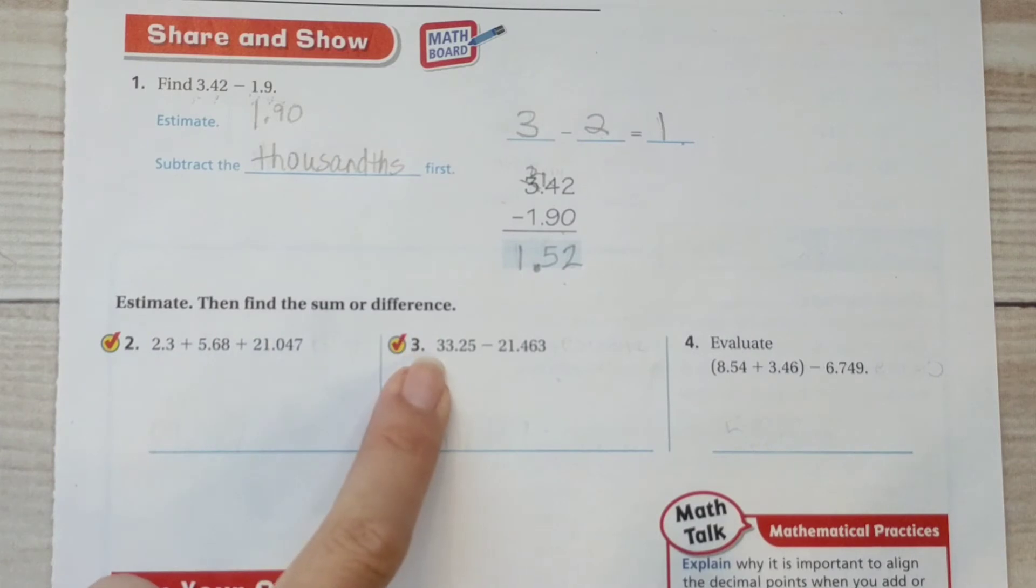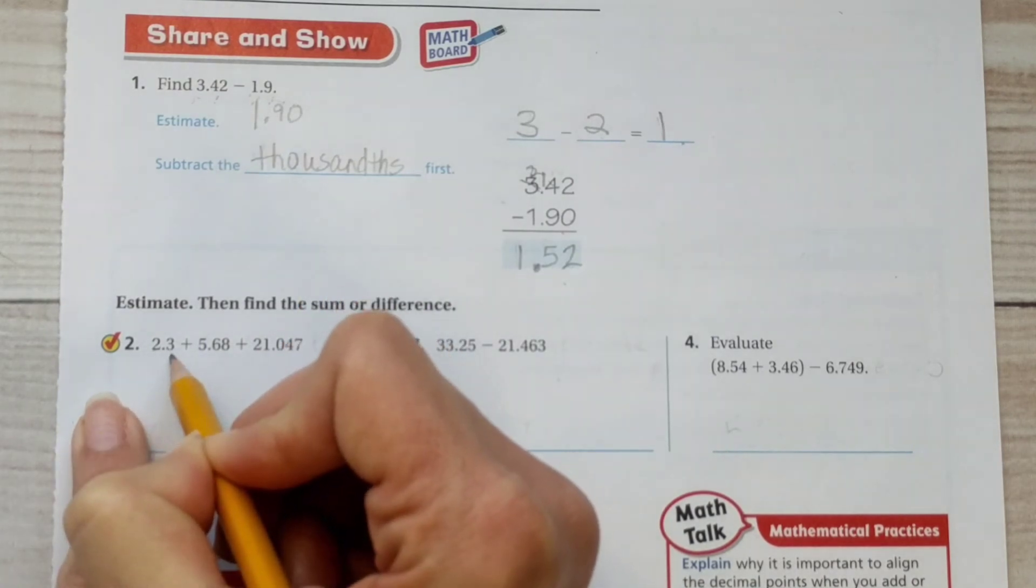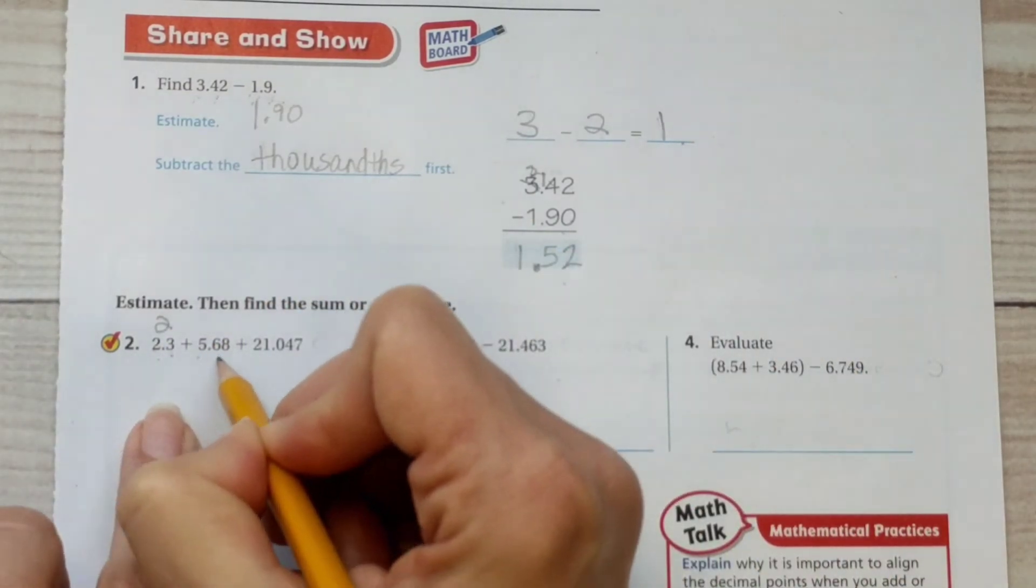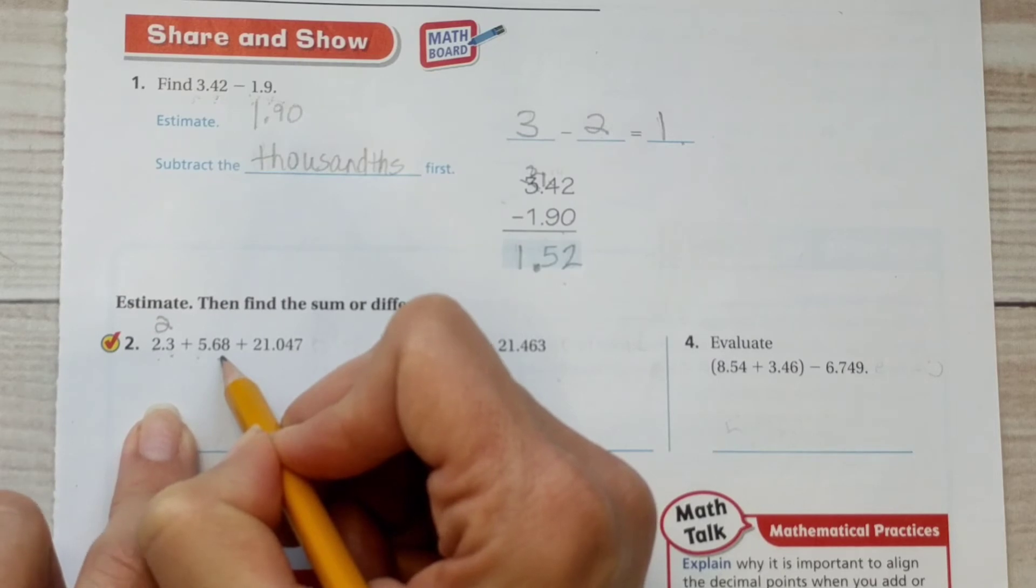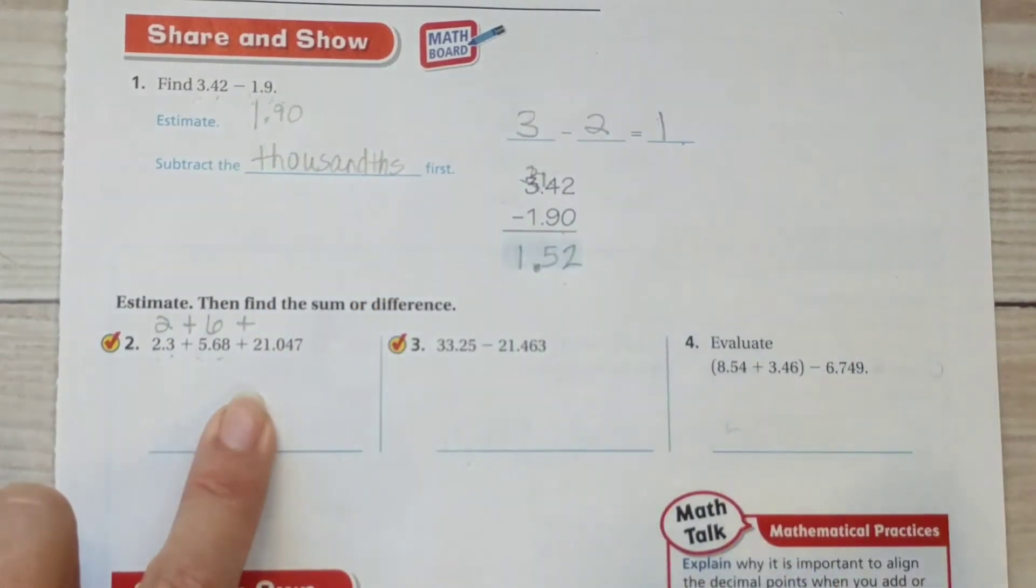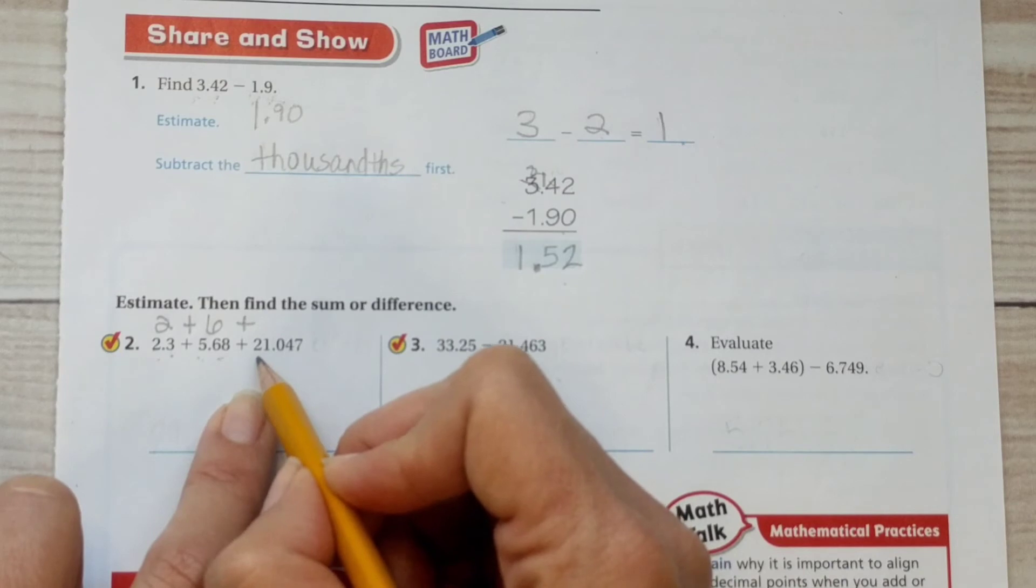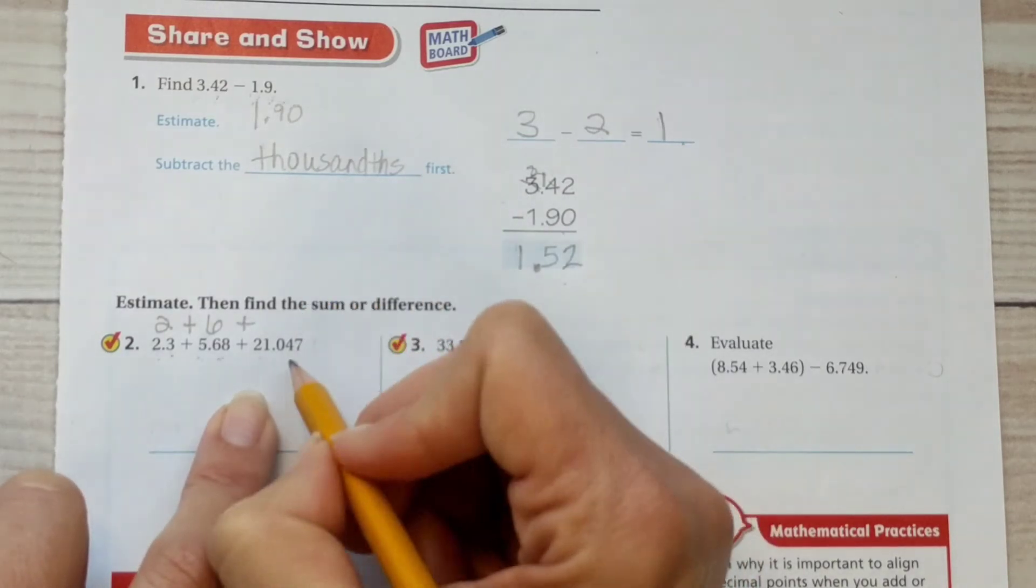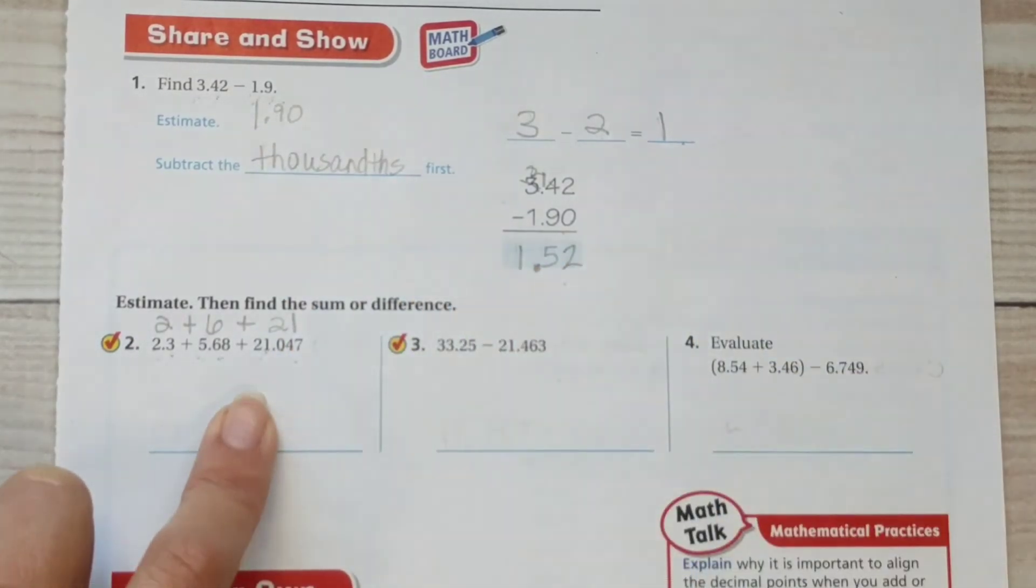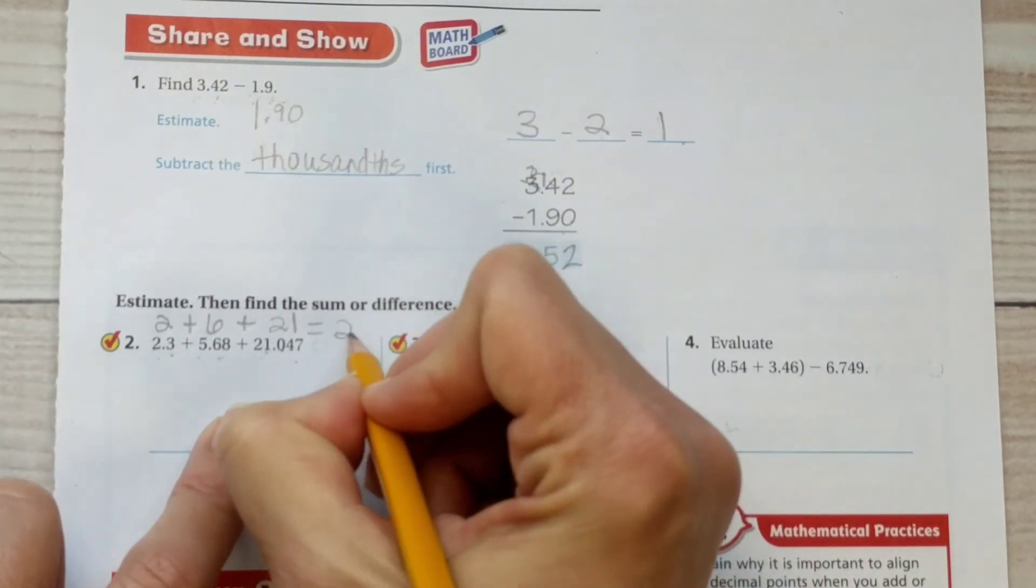Estimate, then find the sum or difference. So first we're going to estimate. We have 2.3. Looking at that, that's not a 5, so it's not rounding up. So this is basically 2. 5.68, the 6 is greater than 5, and therefore it does round up this 5 to a 6. And we're adding plus 21.047. The 0 does not impact that 1. Therefore, this stays 21. So we have 2 plus 6 plus 21. So this is basically 8 plus 21. So our estimate is 29.